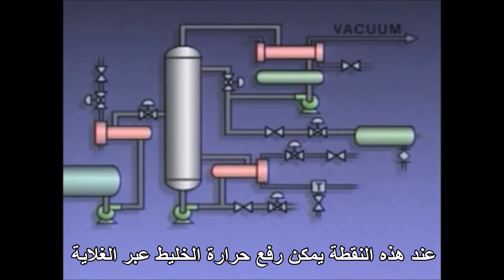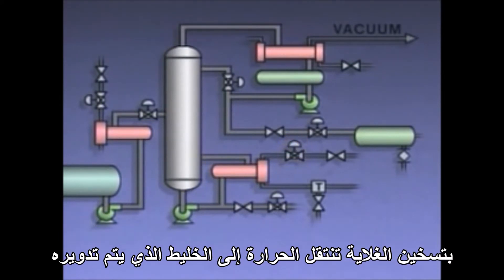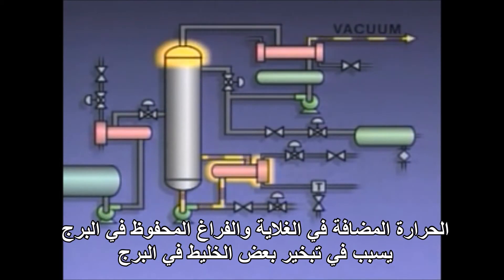At this point, heat can be applied to the mixture in the reboiler. To do this, a temperature controller is used to open a steam valve to the reboiler. As the reboiler warms up, it transfers heat to the circulating mixture. The heat added in the reboiler and the vacuum maintained in the column causes some of the mixture in the column to vaporize.